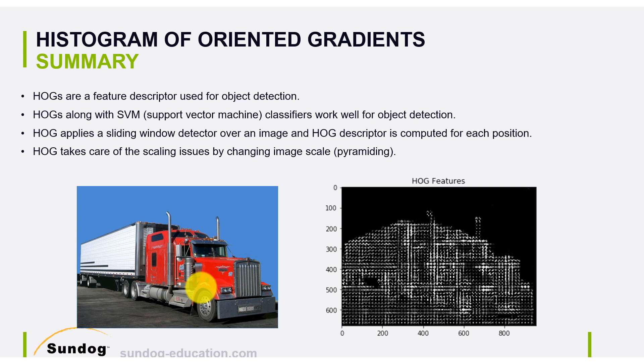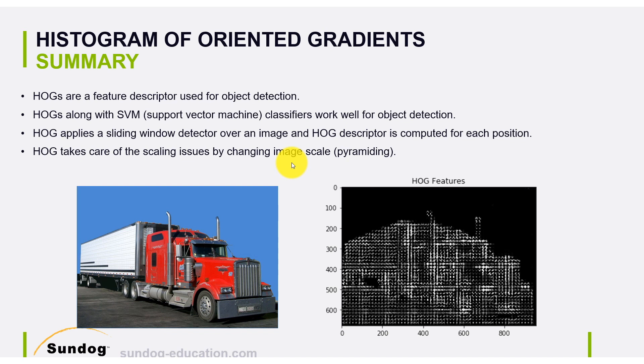To summarize: HOG features are a feature descriptor used for object detection. HOG is very powerful because it can be coupled with a support vector machine classifier — a machine learning algorithm that classifies objects. HOG applies a sliding window detector over an image, computing the HOG descriptor at each position. It handles scaling issues by changing the image scale parameter, is not dependent on color, and is a very compact way of representing images. I hope you enjoyed it — let's apply HOG features in the next exercise.